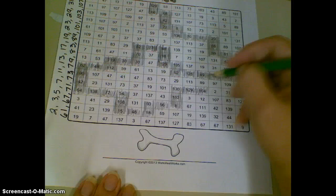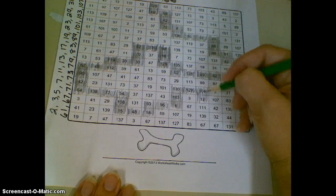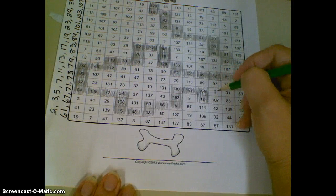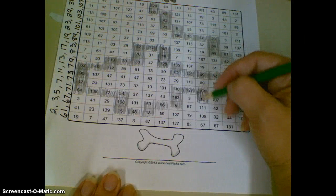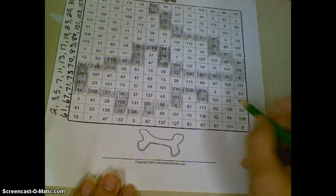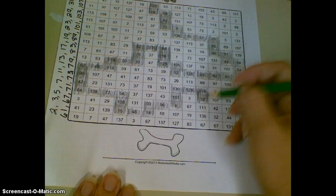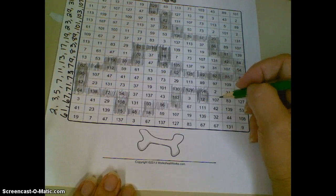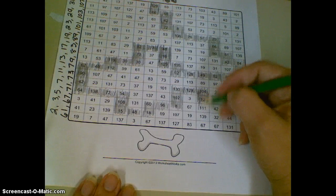104 is composite. 12 is composite. Don't go to 2. That's not even. It's even, but it's not composite. And then, let's see, 111 is composite.